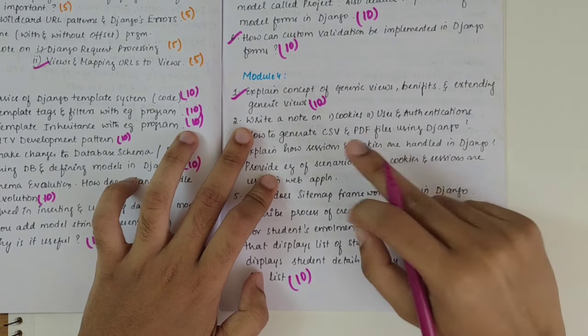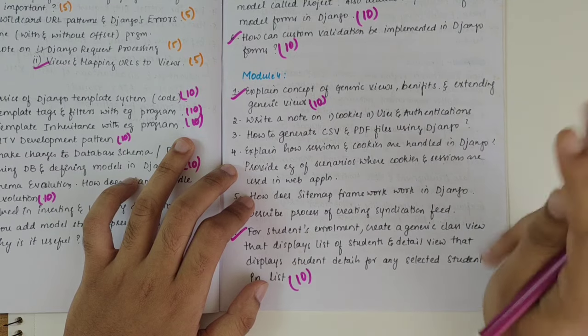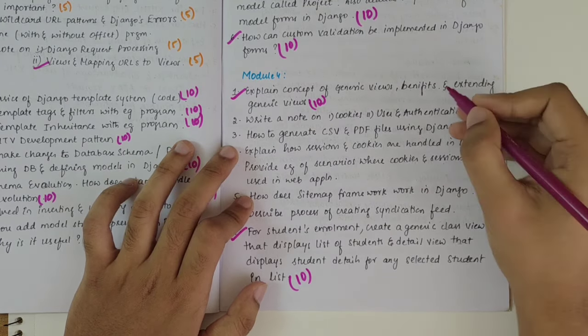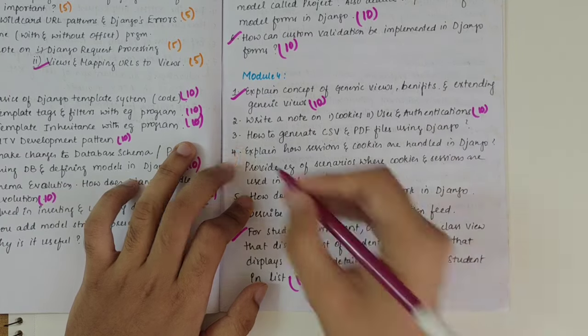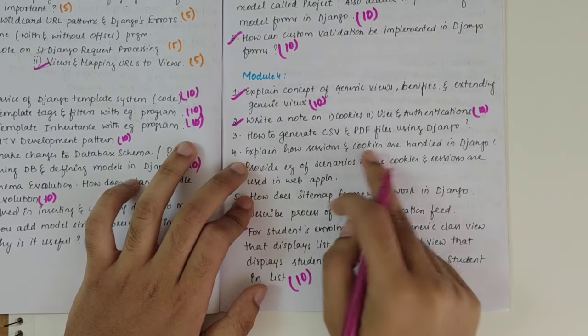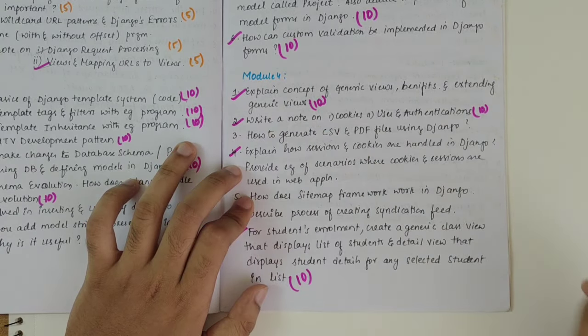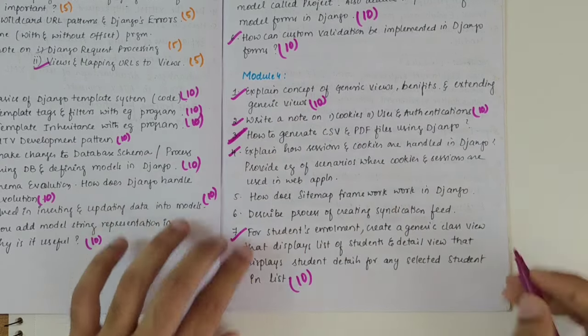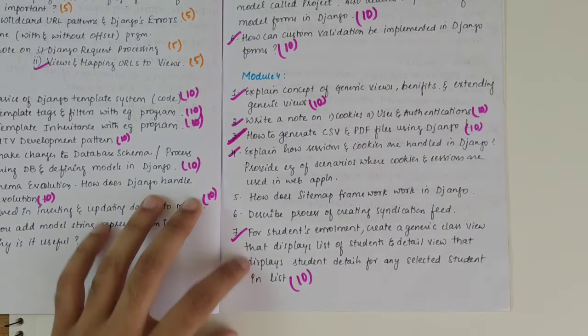Note on cookies, user authentication and cookies and sessions. How are they handled in Django? So those things can sum up to 10 marks. This and how sessions and cookies are handled, 10 marks. How to generate CSV and PDF files? This is a must question, 10 marks for sure. It will be asked.